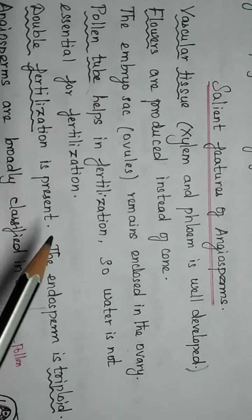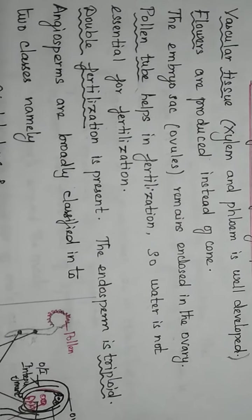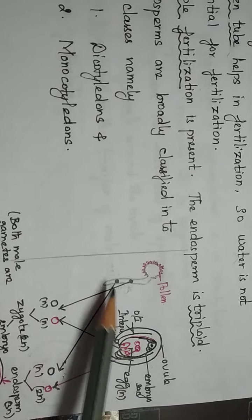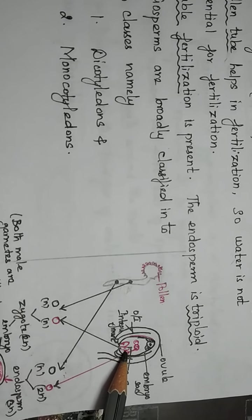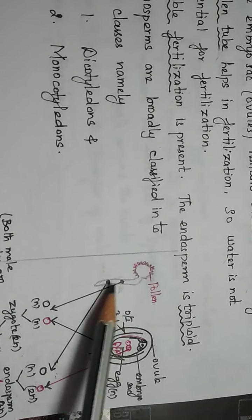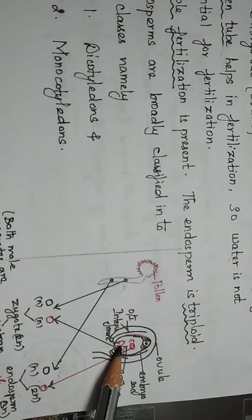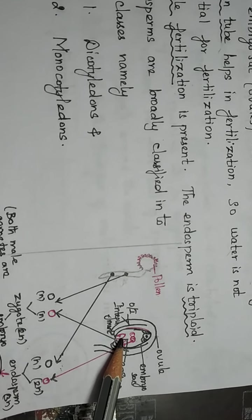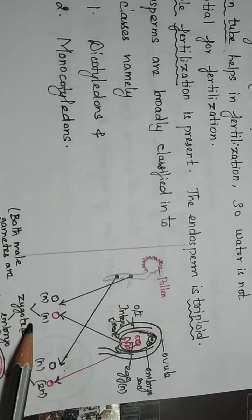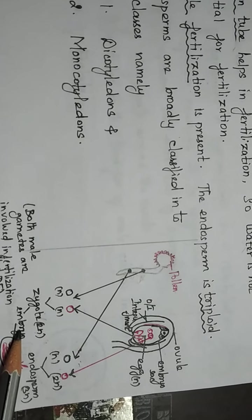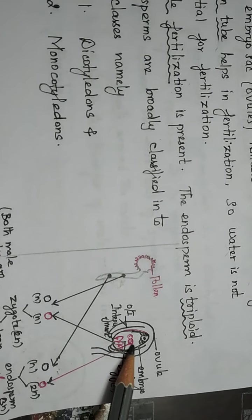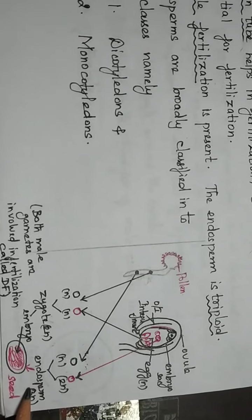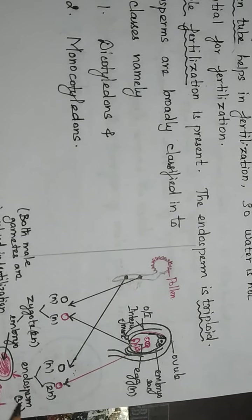Double fertilization is present in angiosperms, and the endosperm is triploid in nature. In double fertilization, pollen grains contain two male gametes. One male gamete fuses with the egg to form a zygote, which then develops into an embryo. Another male gamete fuses with the secondary nucleus present at the center to form the endosperm nucleus, which is triploid in nature.